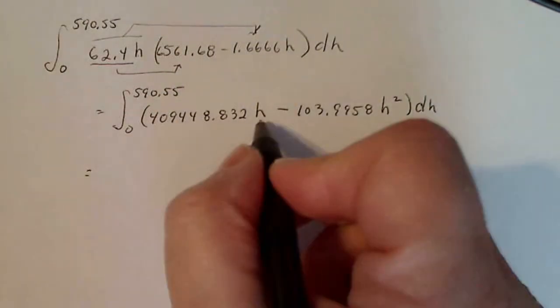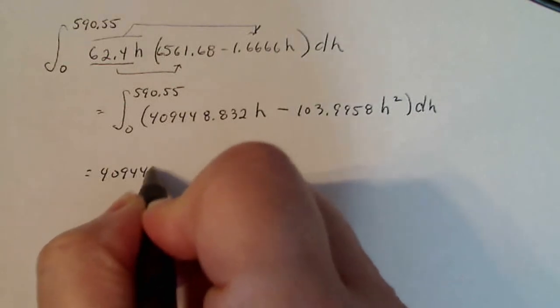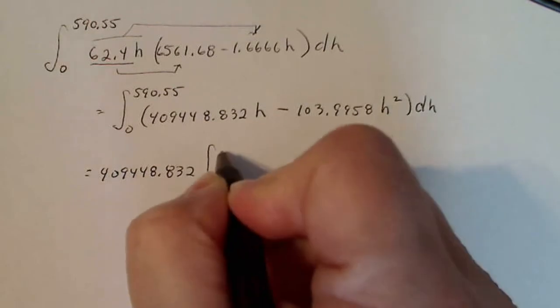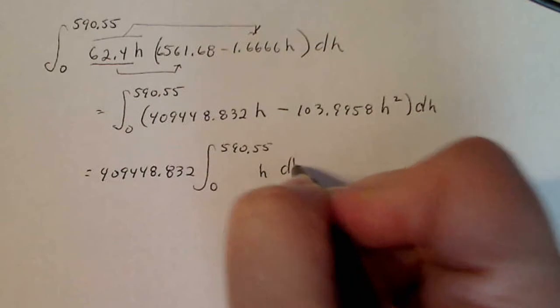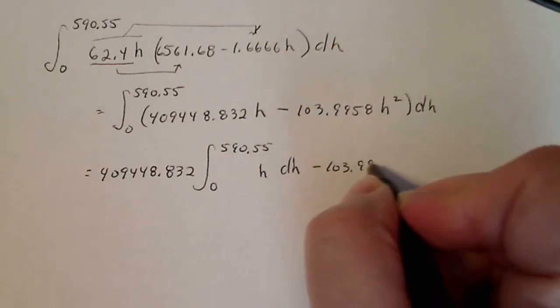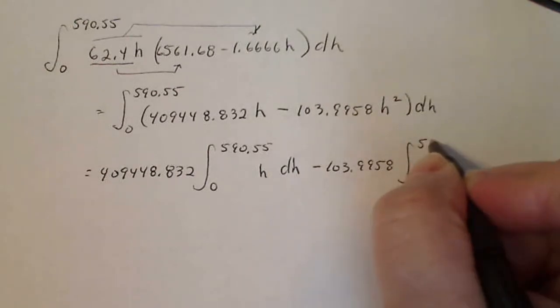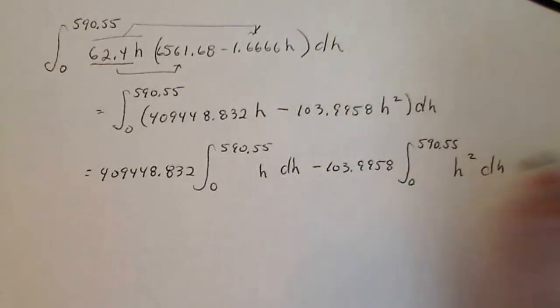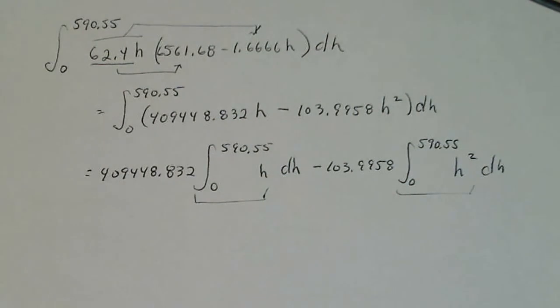So let's do that. If I take the integral of this, I can take out the constant. I can do the same thing on the next one. What your goal is when you integrate stuff is to make it look as easy as possible using as many properties as possible.